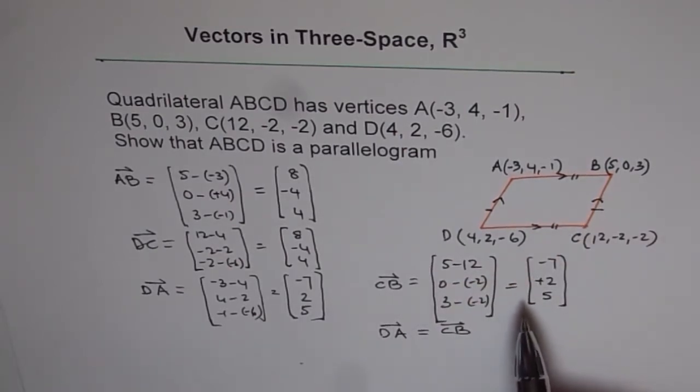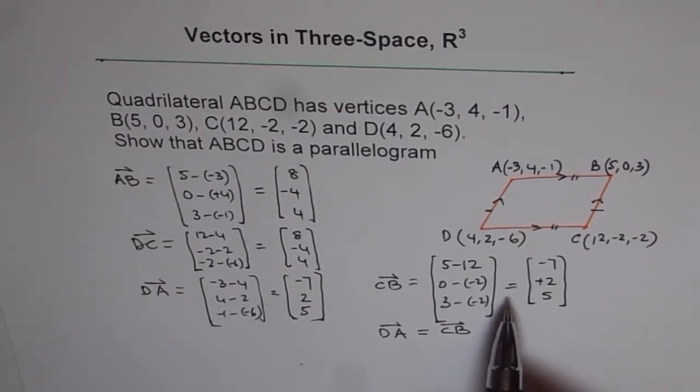Now, since the opposite sides are equal in length, and we have two set of parallel lines here, this quadrilateral is a parallelogram. That is how we can prove this kind of question. Thank you.